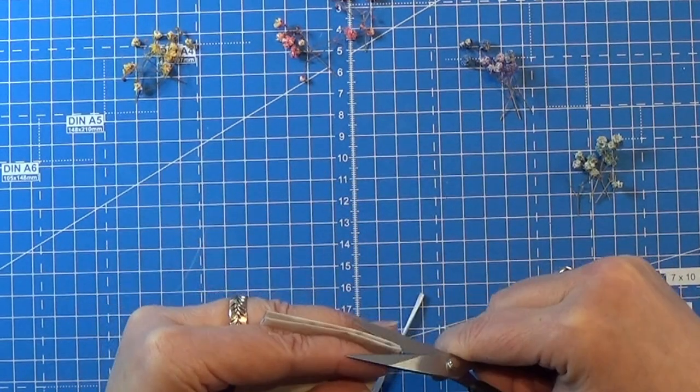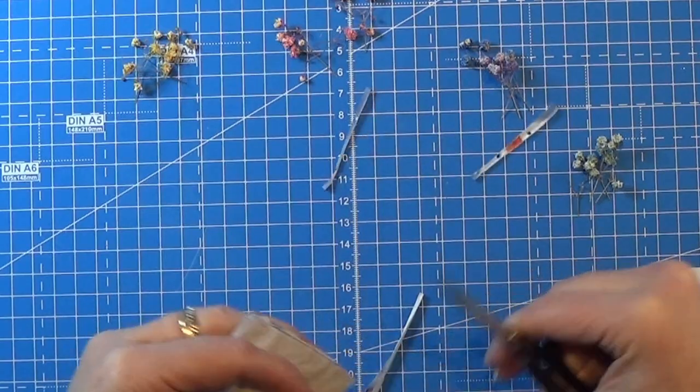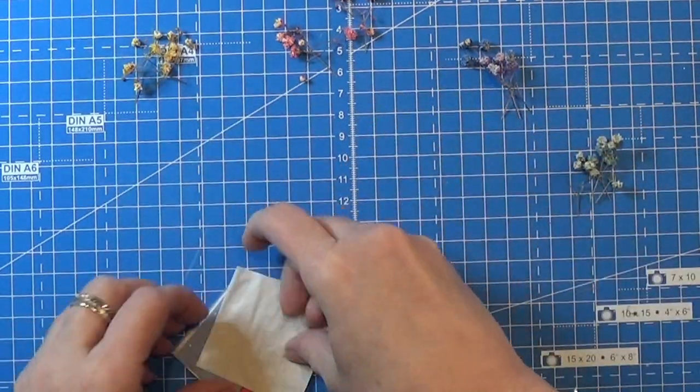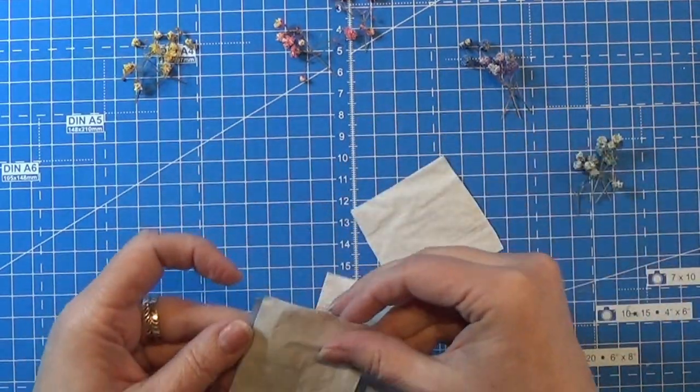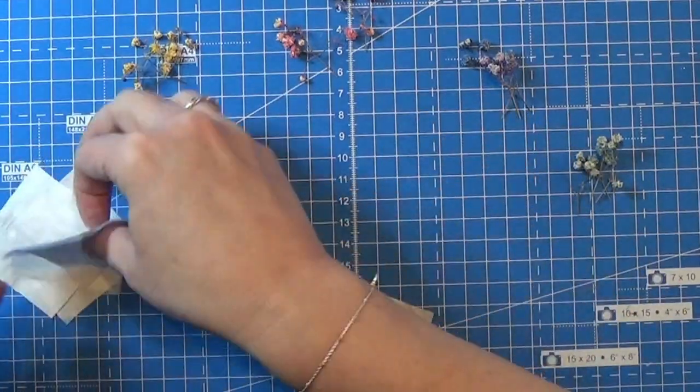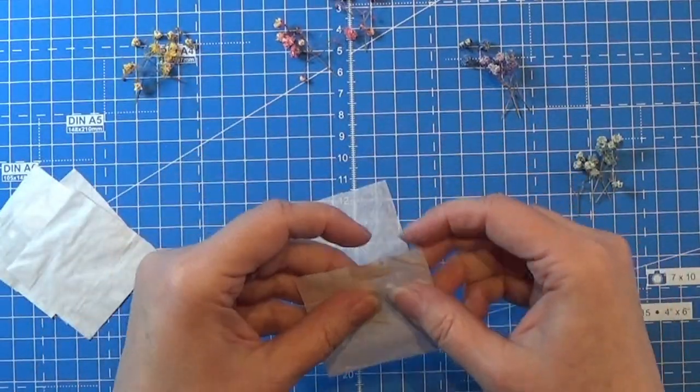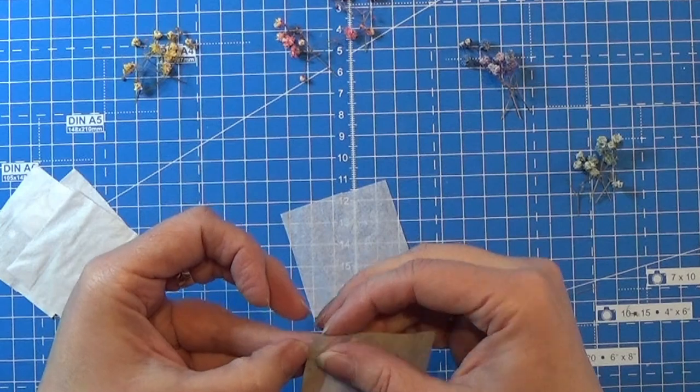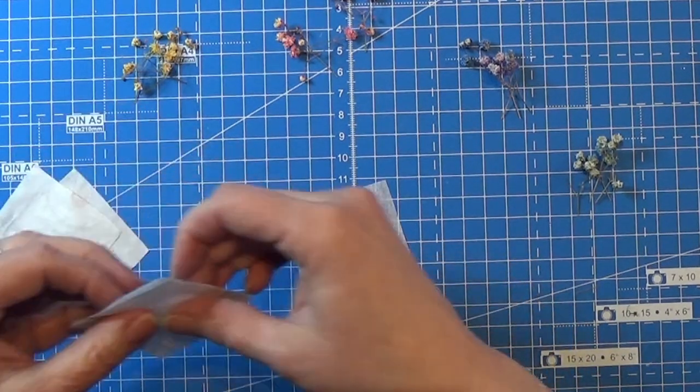So here I have four squares of napkins and I am only using one of these layers of the napkins and of course I'm taking the white piece here.